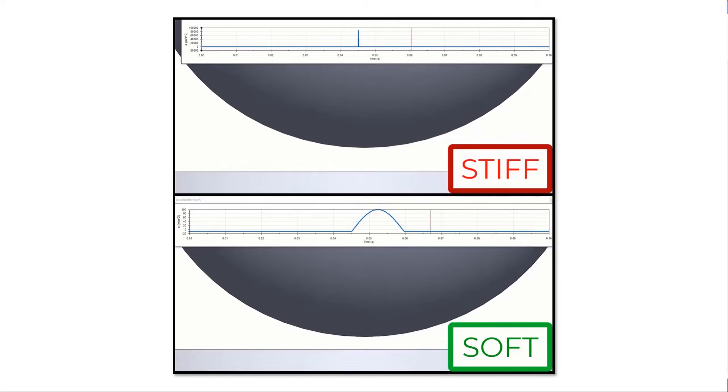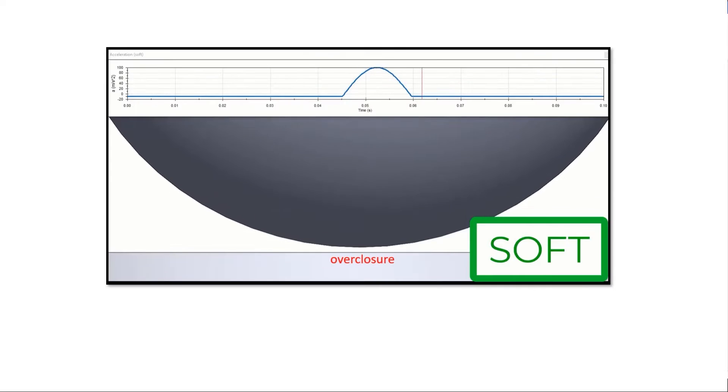Therefore, most FEA tools allow some flexibility in the contacts to make it easier and faster to solve. When two components occupy the same space, we call this overclosure.